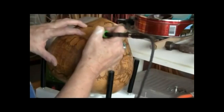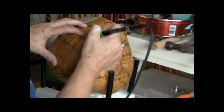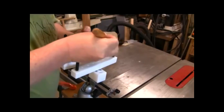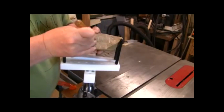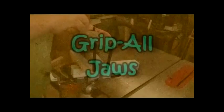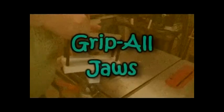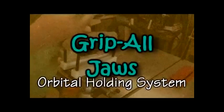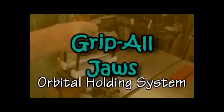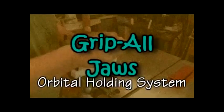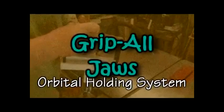Don't get us wrong, straight and square is fine, but Grip All Jaws can hold odd and irregular just as easily. So whether your work is square, round, regular, or irregular, the Grip All Jaws Orbital Holding System can hold it safely and securely and place it where you want it. Grip All Jaws, while you create your masterpiece, we'll hold it for you.